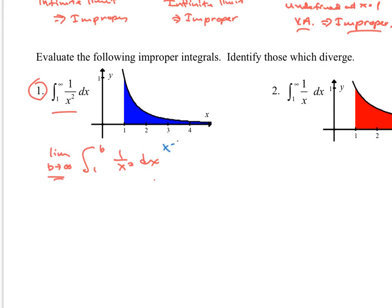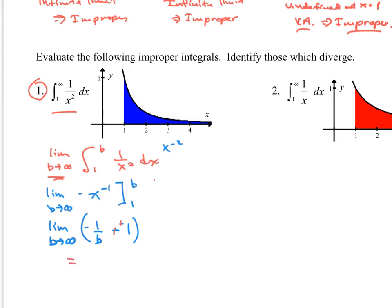So this is x to the negative 2, which gives x to the negative 1 all over negative 1. I'll evaluate that from 1 to b, still carrying the limit. Plugging in: it's negative 1 over b minus negative 1, which turns out to be plus. Now evaluating this limit — 1 over a big number is very small — so we end up with 1.